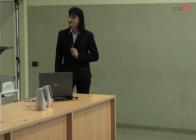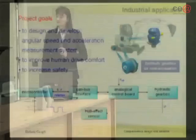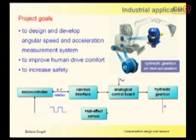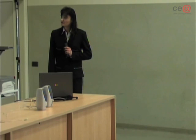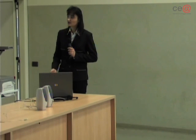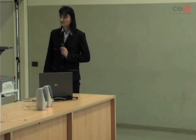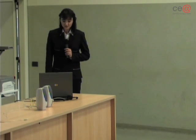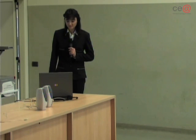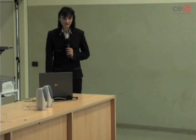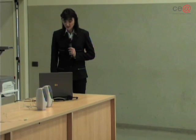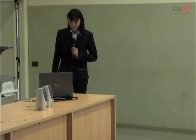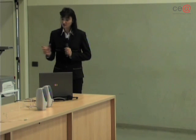The block diagram represents the system architecture based on a master-slave control, where the analogical control board performs a master function, demanding speed, acceleration and rotation estimation to a microcontroller device. This elaborates data coming from a Hall effect sensor — a position sensor fixed on the vehicle model whose output produces a rising front at every motor rotation. Finally, a CAN interface is used as the master-slave communication channel.